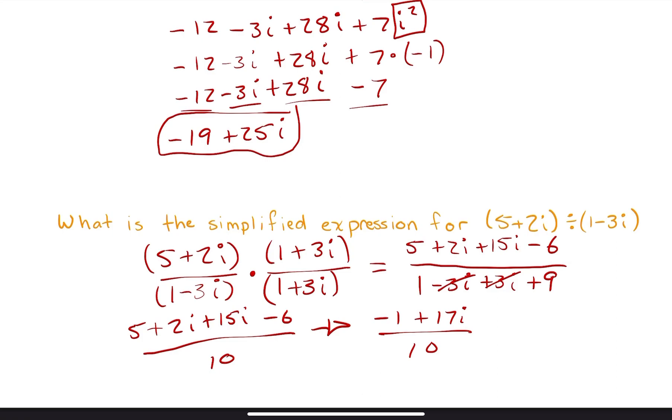Now I'm almost done here, but if I want to write this in a way that looks exactly like a plus bi, I can separate the numerator because the denominator is common. So I could write this as negative 1 tenth plus 17 over 10i. And then now we have, of course, ratios for our a and b, but it's still in the form of a plus bi.